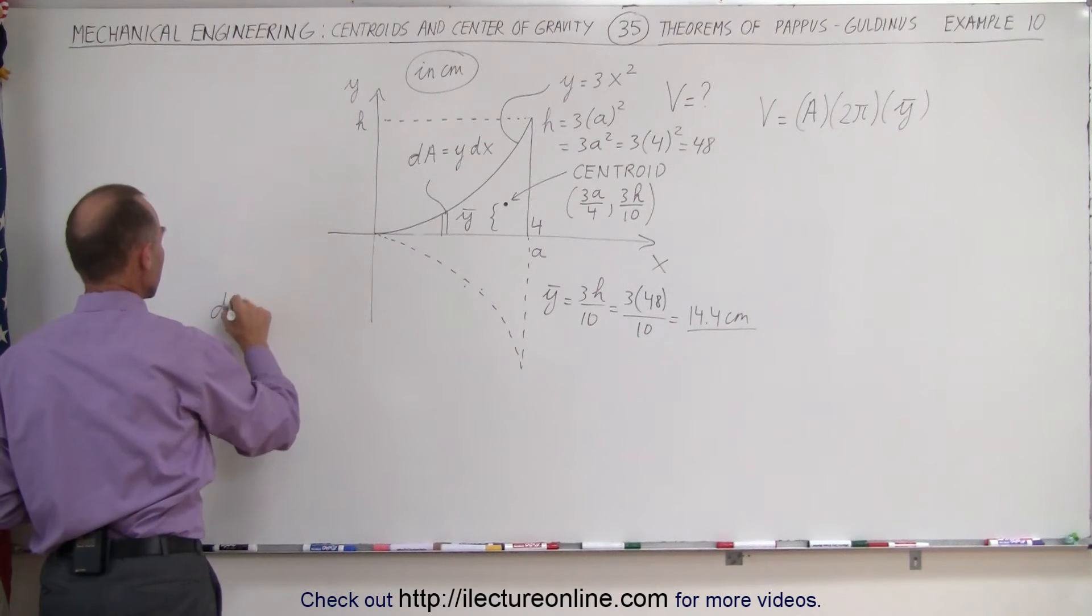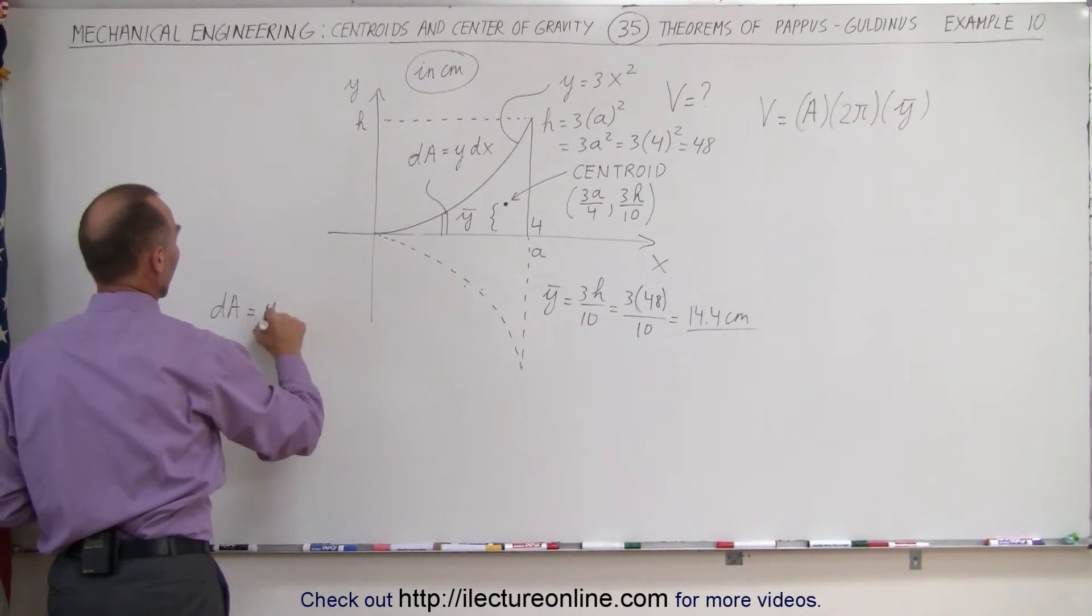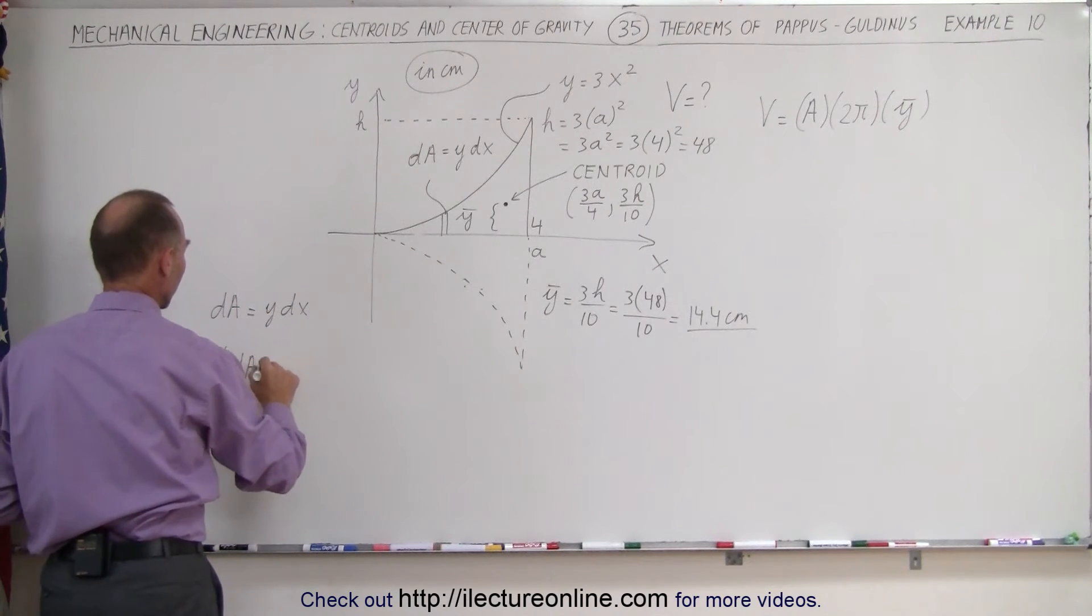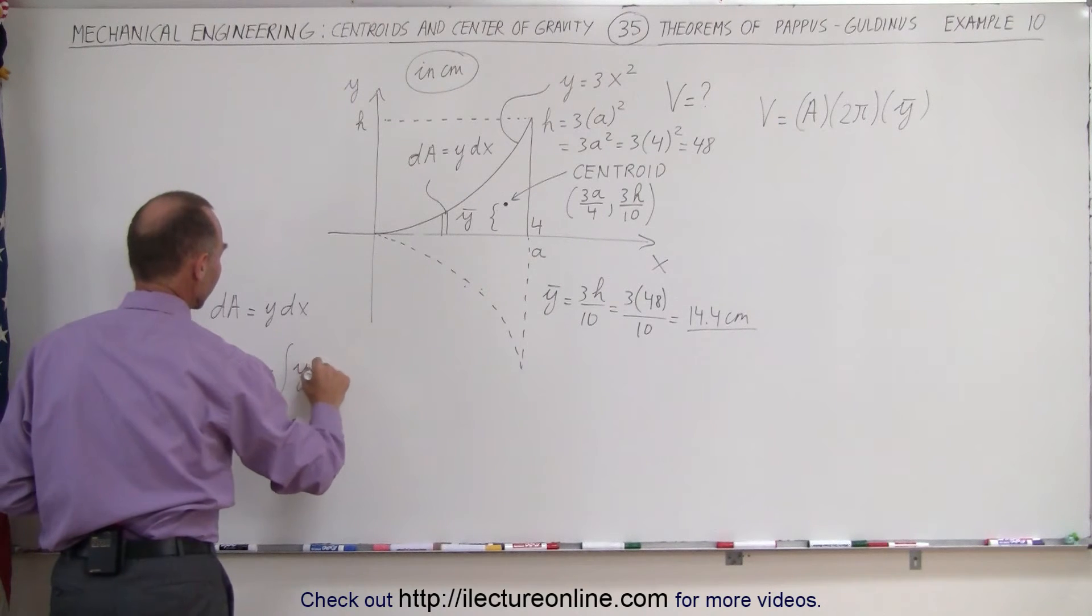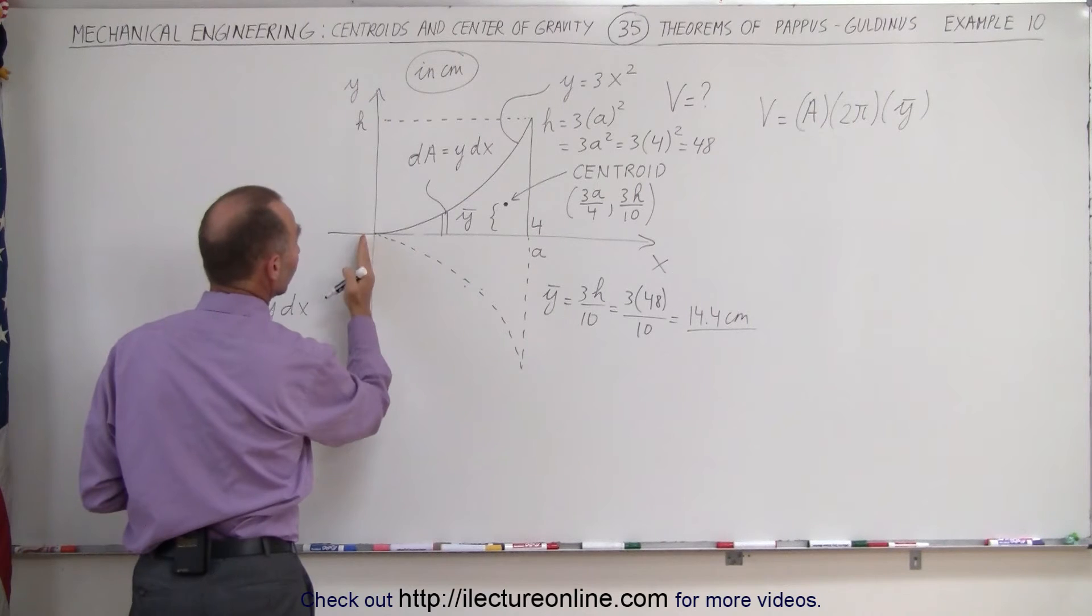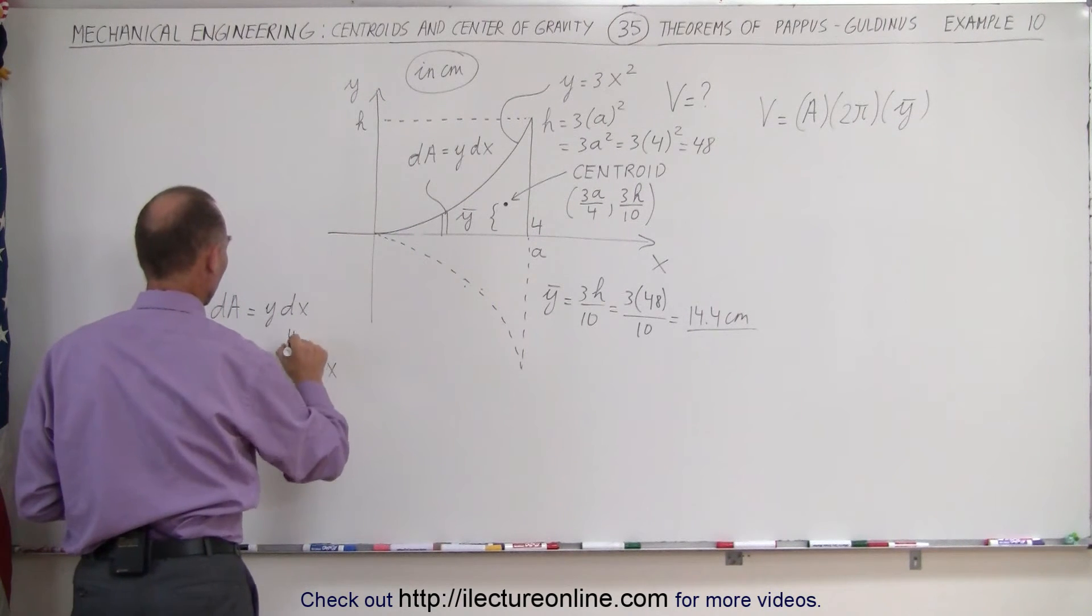So dA is equal to y dx and A is equal to the integral of all the dA's which is equal to the integral of all the y times dx's and we're going to have to integrate from x equals 0 to x equals 4.